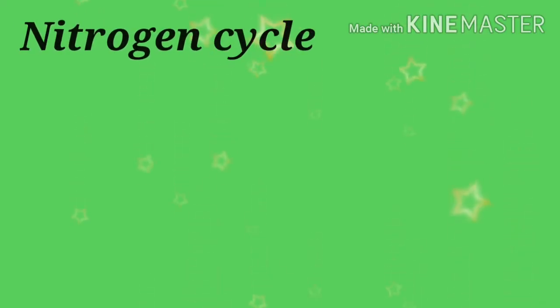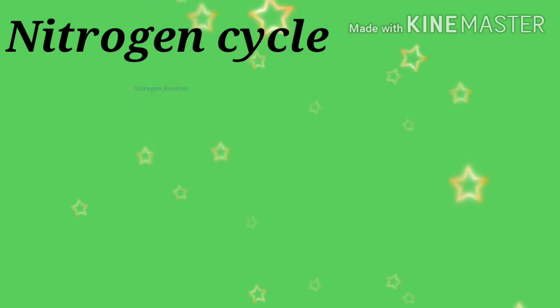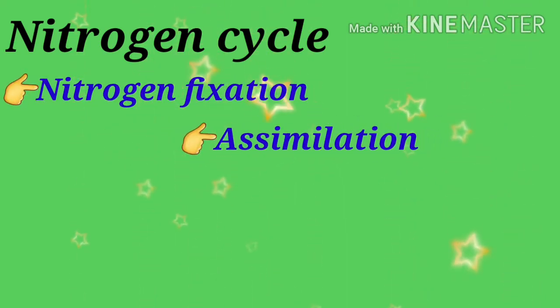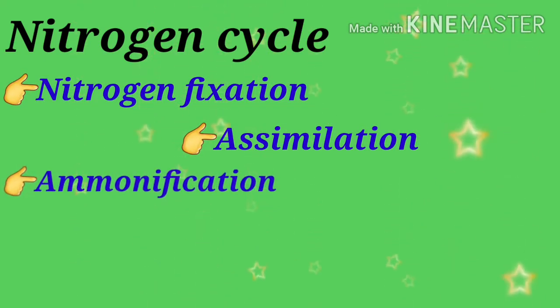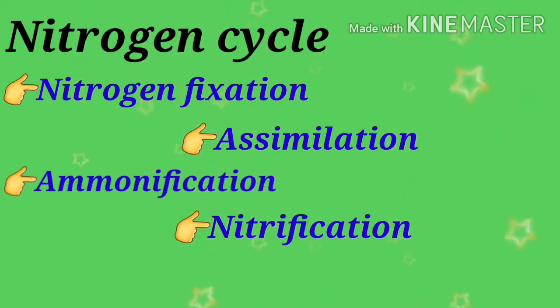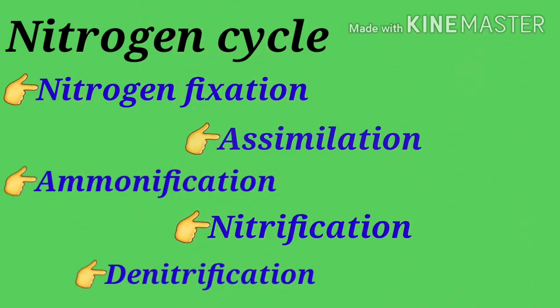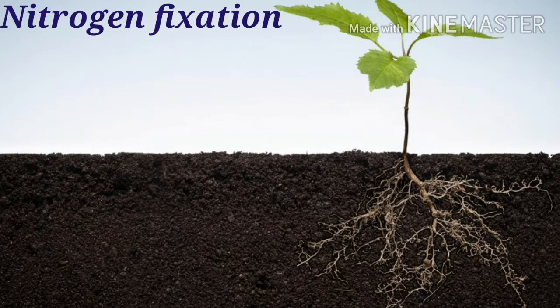The nitrogen cycle is composed of five main processes: nitrogen fixation, assimilation, ammonification, nitrification, and denitrification.